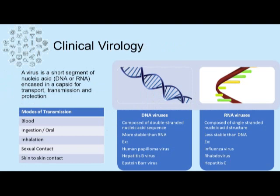The virology department detects short segments of nucleic acid, either DNA or RNA, that are encased in a capsid for transport, transmission, and protection. Common modes of transmission for viruses include blood, ingestion, inhalation, sexual contact such as HIV or hepatitis C, as well as skin-to-skin contact. Viruses can be either DNA viruses or RNA viruses. A DNA virus is composed of a double-stranded nucleic acid sequence, making it much more stable in the environment. Examples of a DNA virus include human papillomavirus, hepatitis B, and the Epstein-Barr virus.